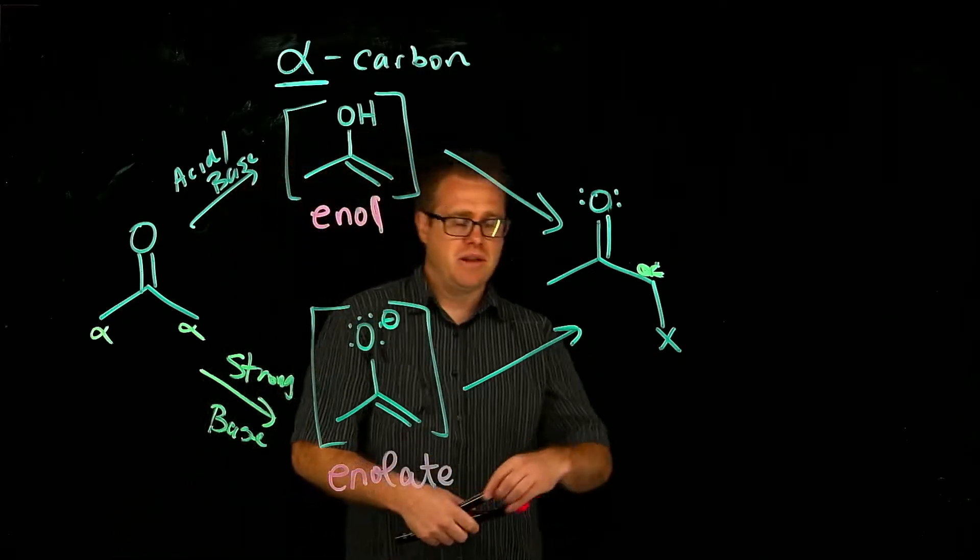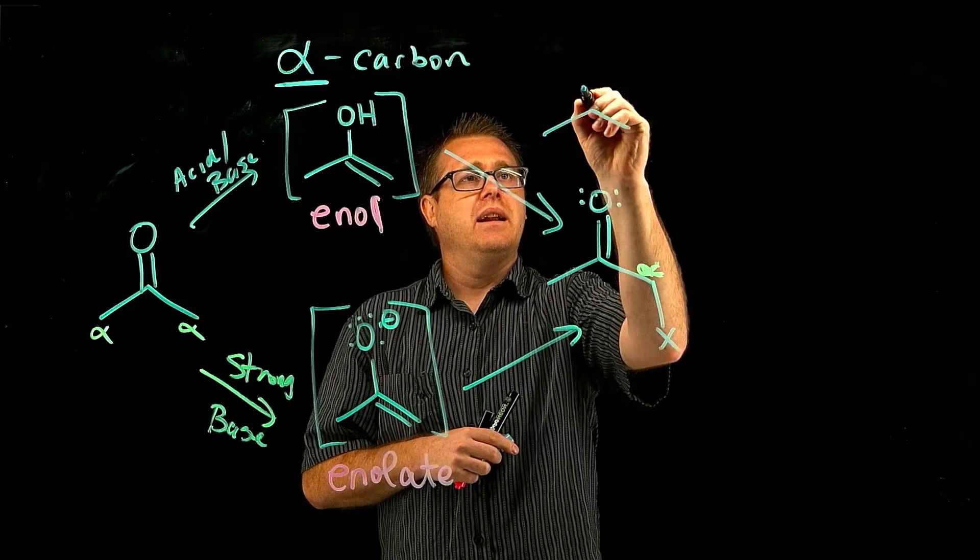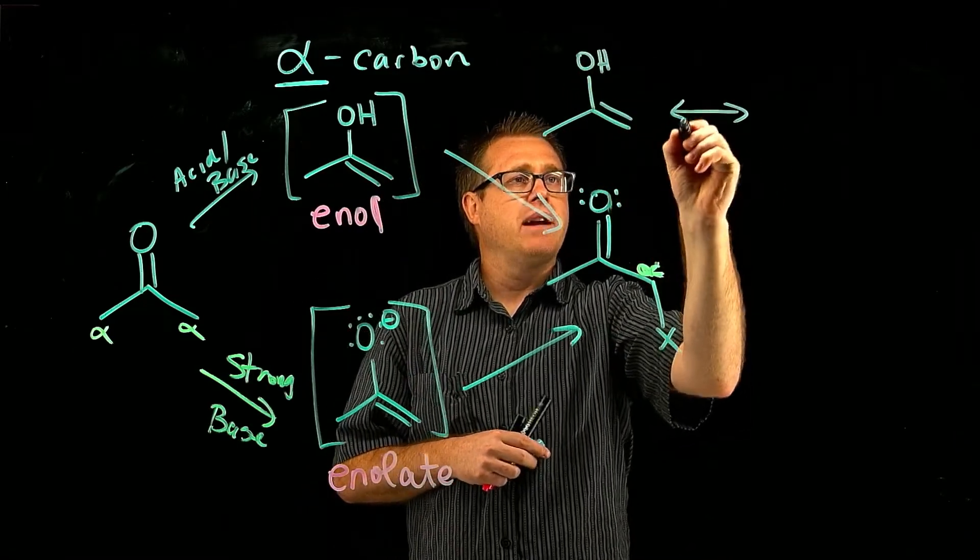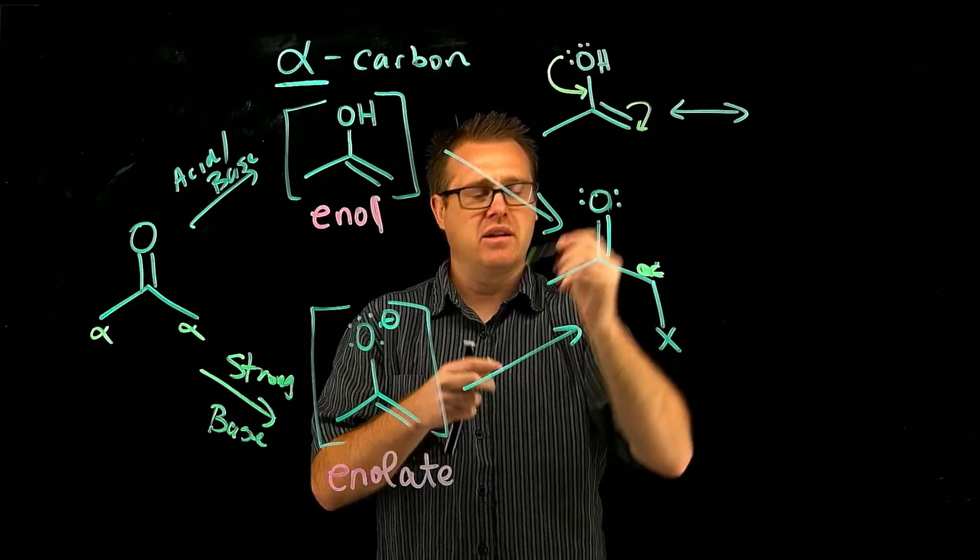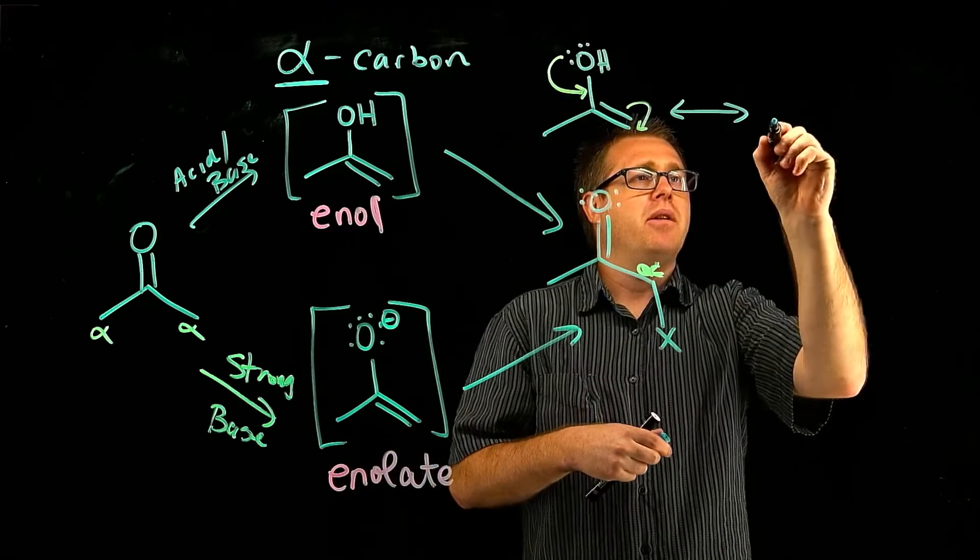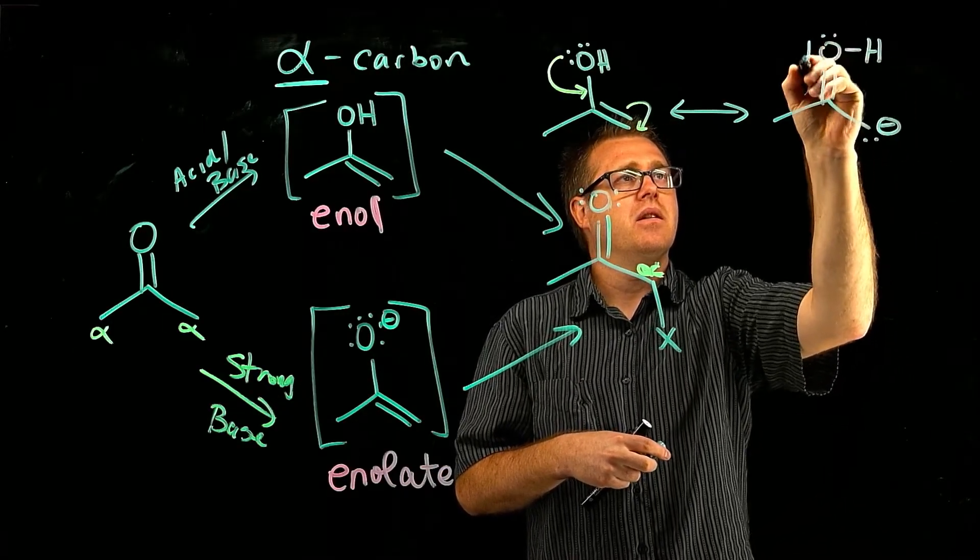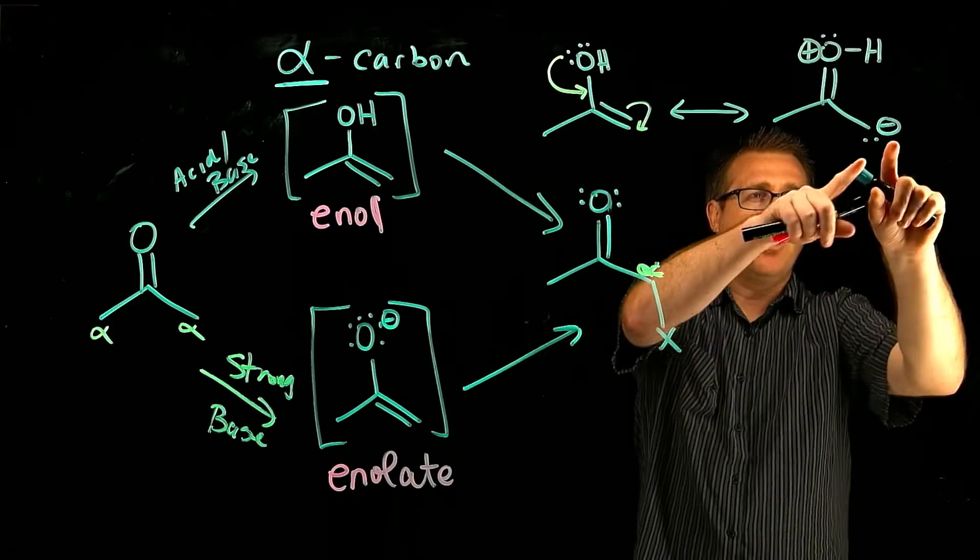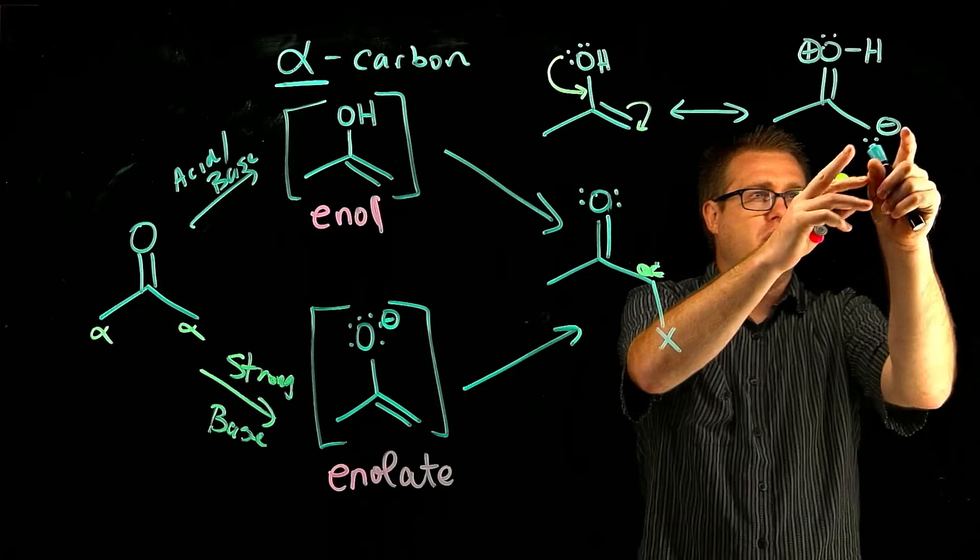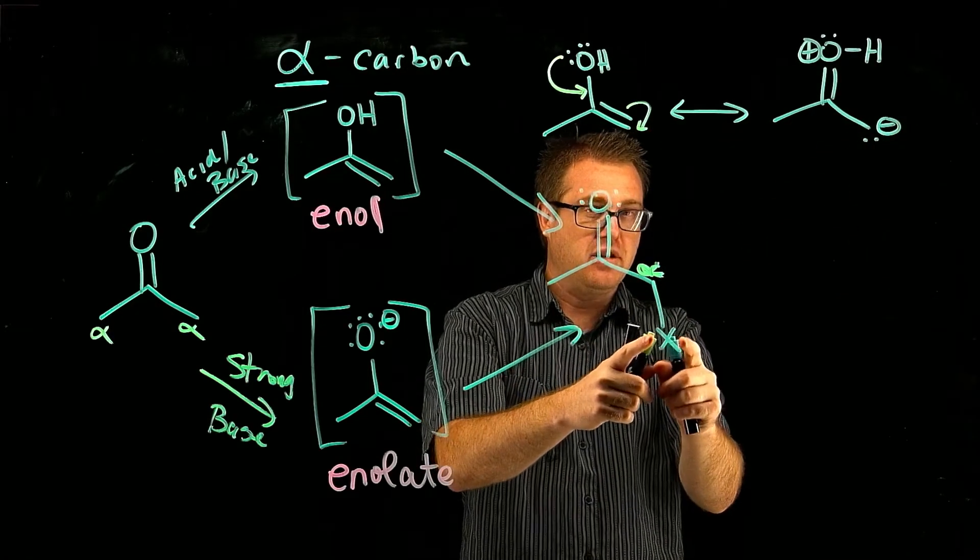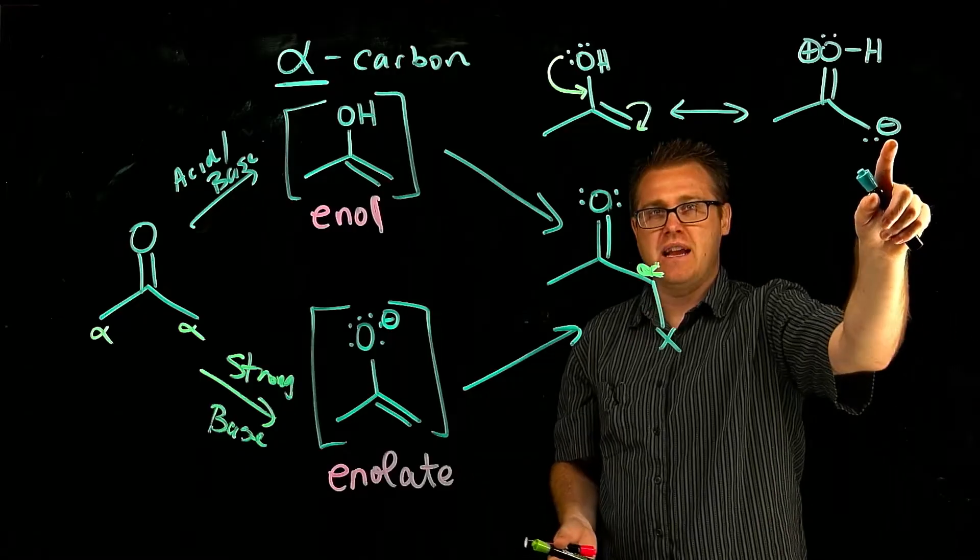And one reason why we do that is because when you take a look at the enol, if we look at an enol, we can see a resonance structure in which that can come down and that goes like that. And we will get a species that looks like this. So there is a partial negative charge on that alpha carbon. Why is that important? Because that alpha carbon is what's reacting with our X to form that alpha X bond. So that guy right there has a partial negative charge.